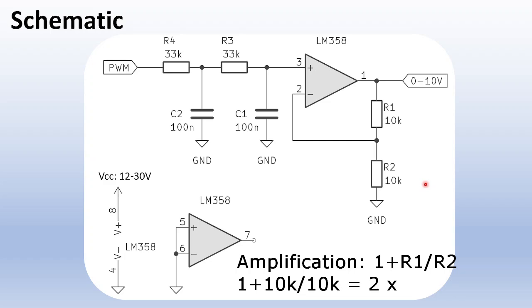Note that the value of R1 and R2 is not critical. It is the ratio that sets the amplification. So 2 times 33K or even 2 times 100K also works fine.